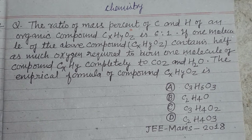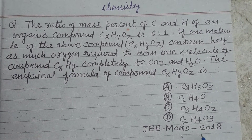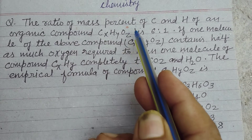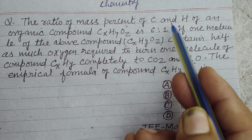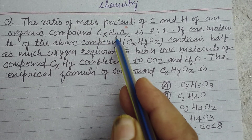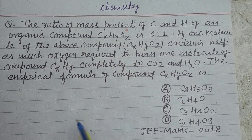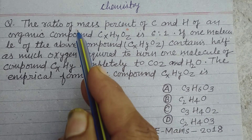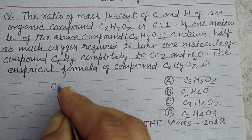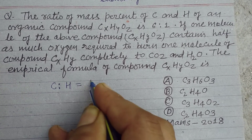Hello students, warm welcome to this YouTube channel. Question from JEE Mains 2018, Chemistry. The ratio of mass percentage of carbon and hydrogen of an organic compound CxHyOz is 6 ratio 1. So the ratio of carbon to hydrogen is 6 ratio 1.